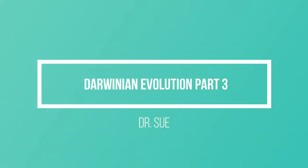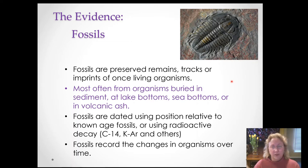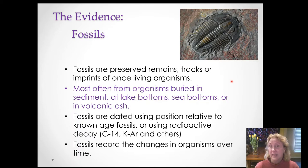The evidence for evolution falls into two big categories. One is the fossil record — things that are dead, things that are extinct. The other is a comparison of things that are alive today. So let's talk about the fossil record first.